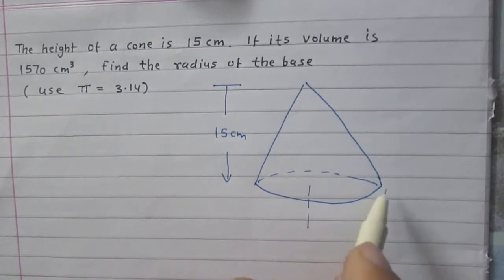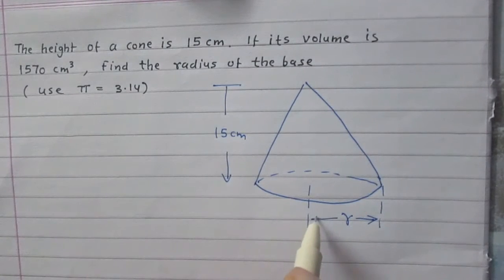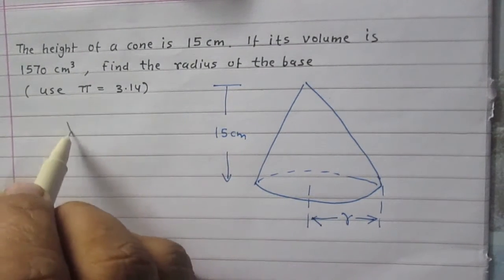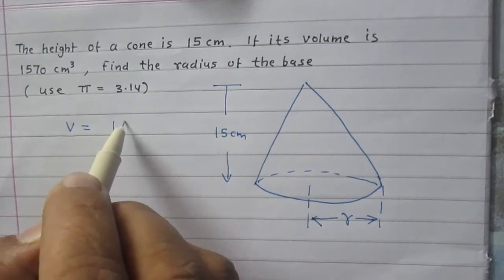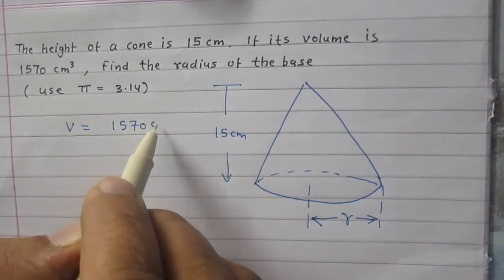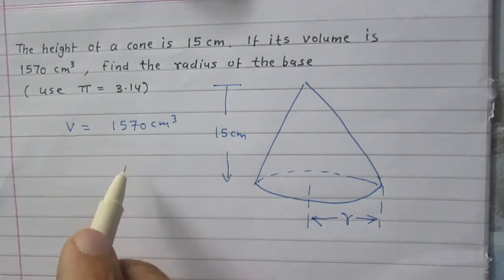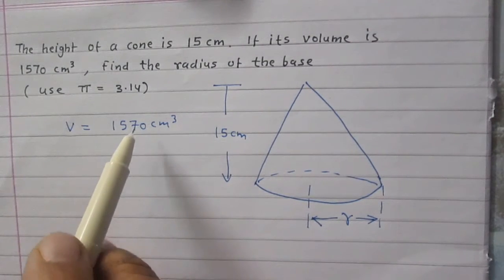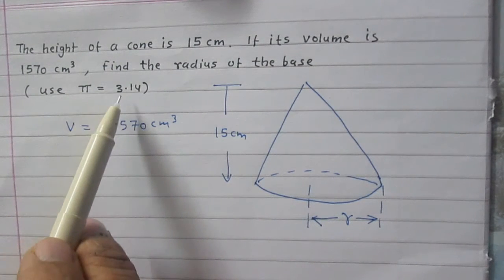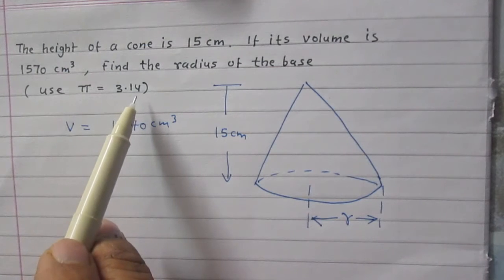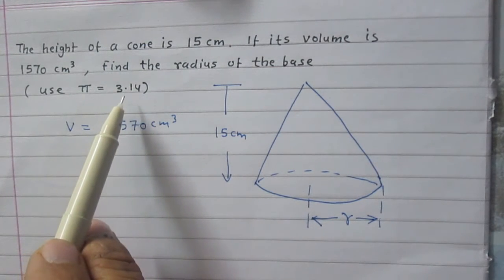We are to find the radius r of the base of this cone. We are given the volume of the cone is 1570 cubic centimeters, and the value of π is 3.14.